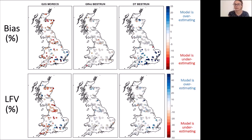In the southeast we can see that both Grid-to-Grid and dynamic top model are producing too much flow in their simulations compared to GR4J. Grid-to-Grid then tends to underestimate flows in the west and north of Great Britain. There are some really good reasons for this.